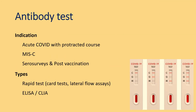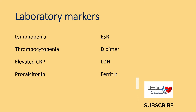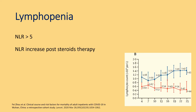Antibody tests are generally not used during acute COVID-19 illness. They are indicated in those with a protracted course, to diagnose multisystem inflammatory syndrome of children (MIS-C), in serosurveys, and to assess post-vaccination response. They can be performed by rapid test or ELISA. Common laboratory findings in SARS-CoV-2 infection include lymphopenia, thrombocytopenia, elevated CRP, and elevated procalcitonin. Lymphopenia with relative neutrophilia is consistently reported.